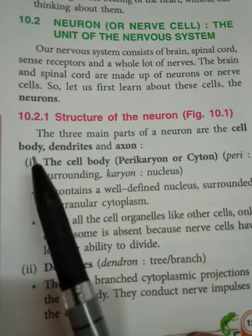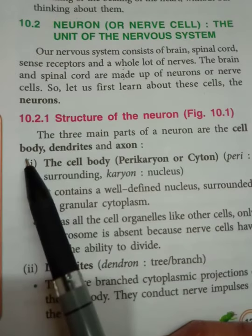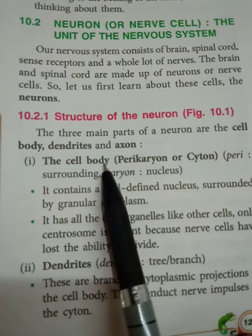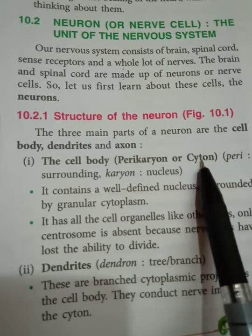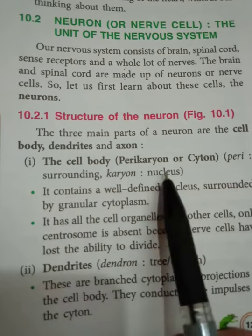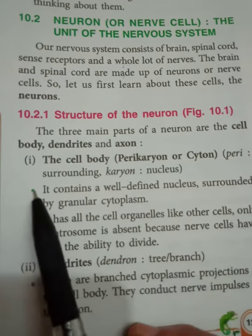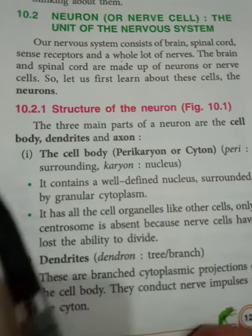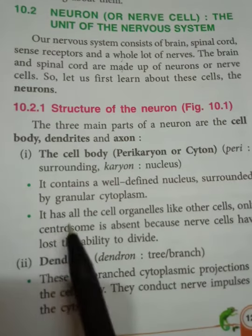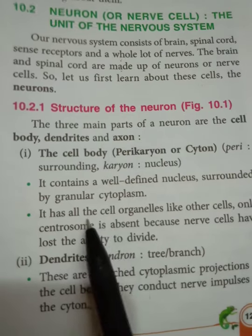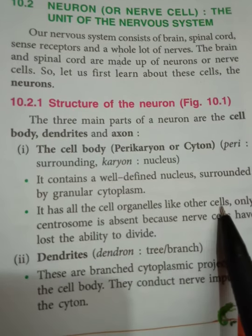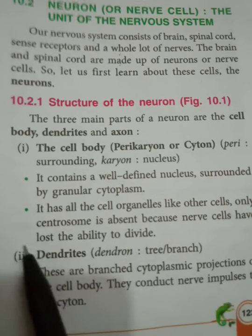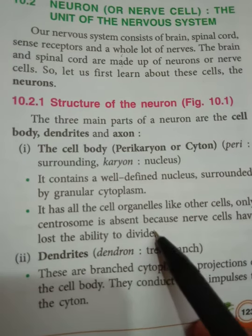The structure of the neuron has three main parts: the cell body, dendrites, and axon. The cell body is also called the perikaryon or cytone. It surrounds and contains the nucleus in the center, surrounded by granular cytoplasm. It contains all the cell organelles like other cells — only the centrosome is absent because the cells have lost the ability to divide.